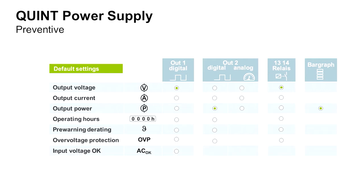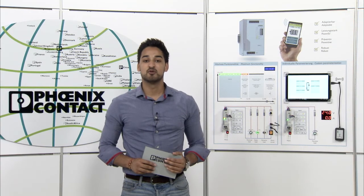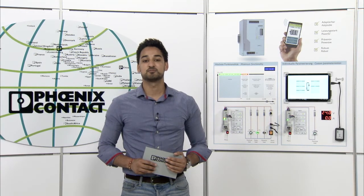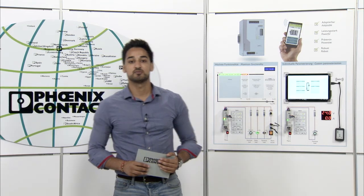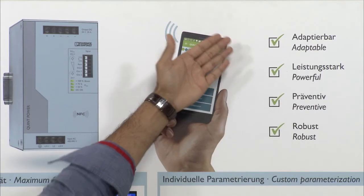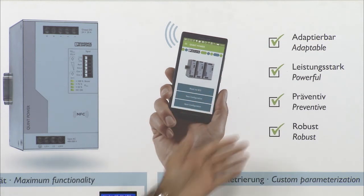And last but not least you can also monitor the input voltage to store system states without any loss of data in the event of mains failure. If you want to know more about the new Quint Power of the 4th generation, then watch my other videos regarding adaptable, powerful, and robust features.